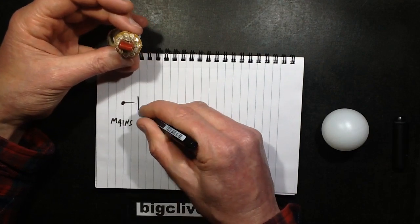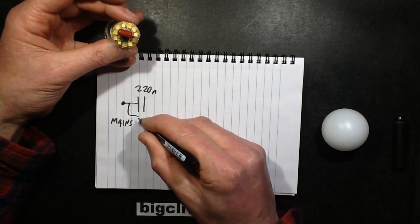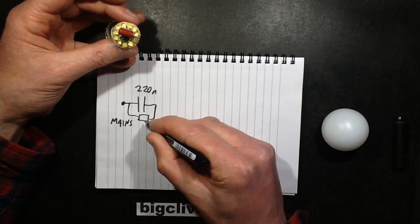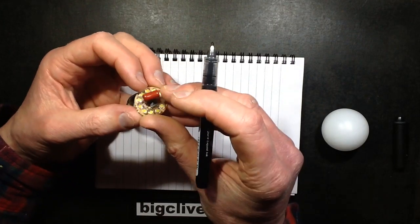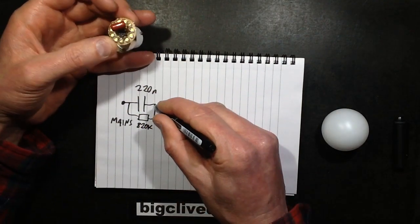It's going through a capacitor, rather predictably 220 nano, and it's got a resistor across it, the discharge resistor of 820K, tiny little resistor.